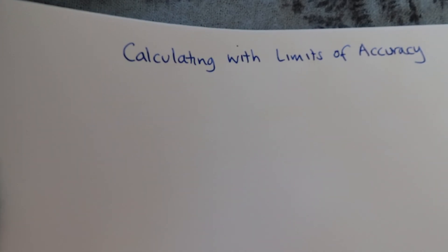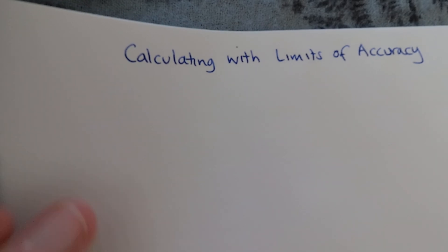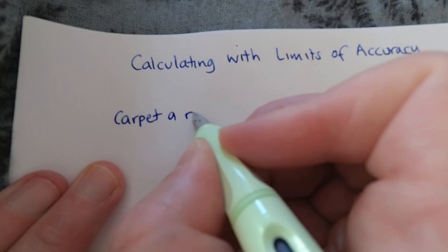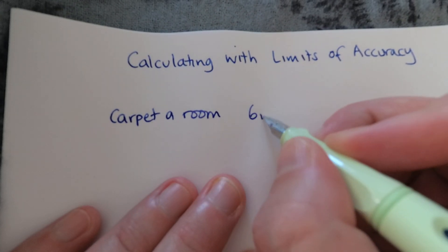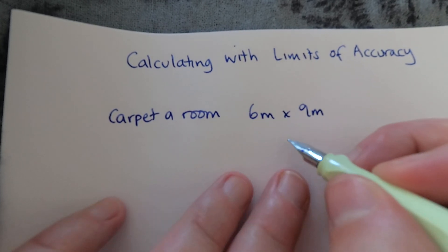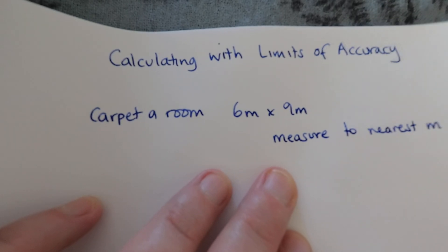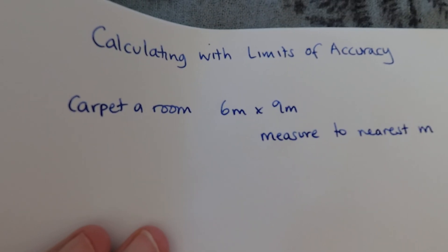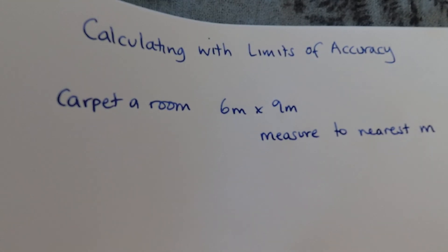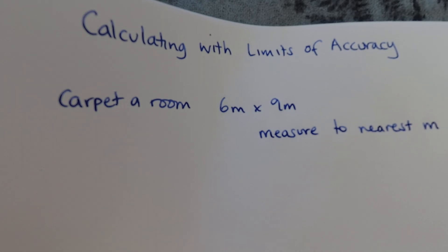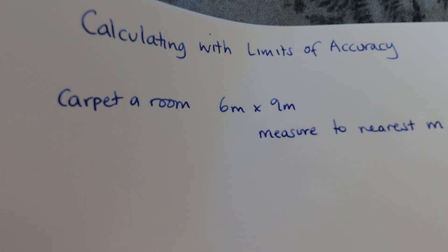Calculating with limits of accuracy is actually one of the very few things we do in Maths that will help you in real life, because if you overall underestimate rounding it can cost you money. For example, if you want to carpet a room and you've measured it to be six meters by nine meters, but only to the nearest meter, you need to know how much carpet to order — too little means gaps, too much means wasted money. So we need to work out the minimum and maximum area.